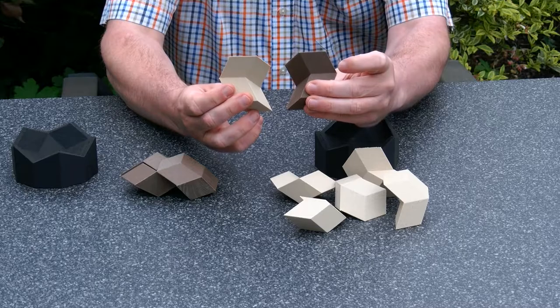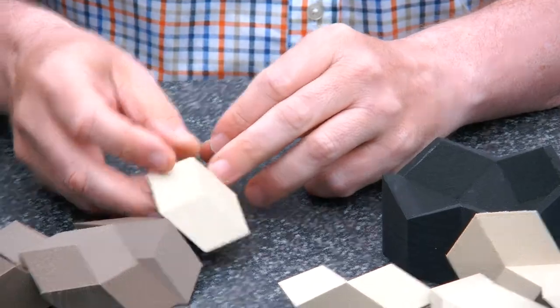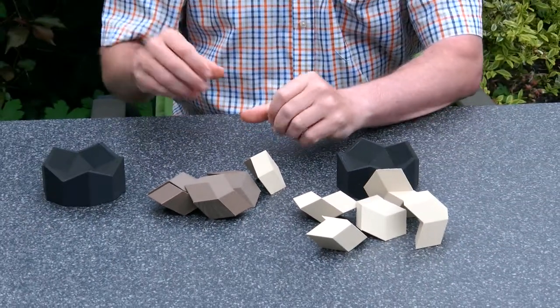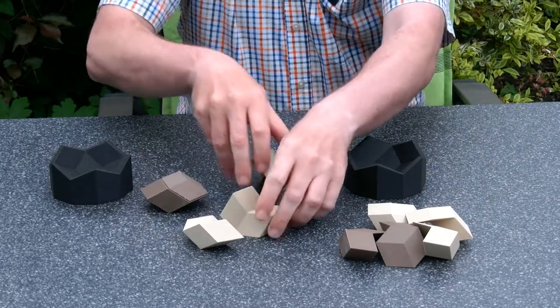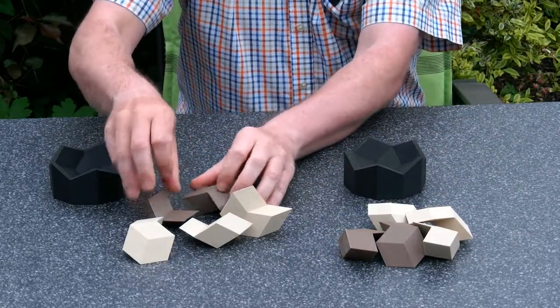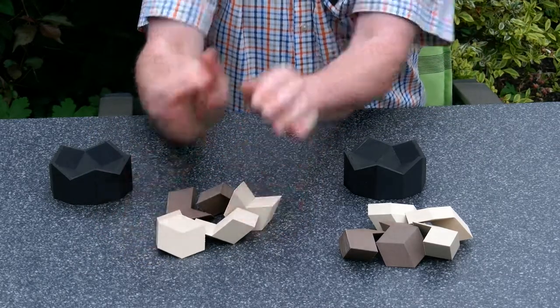As you can see, there are mirror images. And the thing that Anton Hanegraaf discovered is that it's possible to assemble the puzzle with three of each, three of the one type and two of the other type. So this group can be assembled.